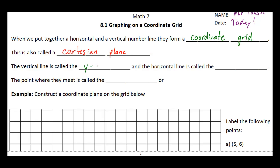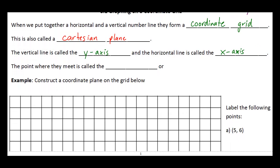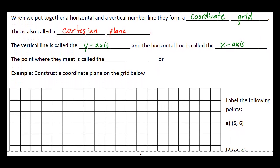The vertical number line is called the y-axis, and the horizontal number line is called the x-axis. The point where those two lines meet — where they come together — we call that the origin. The coordinates of the origin are zero comma zero.